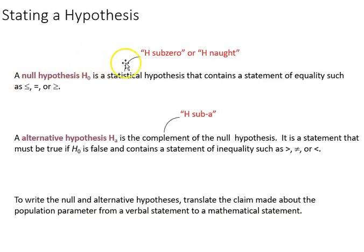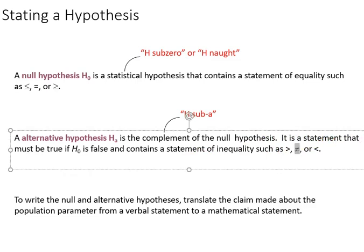The null hypothesis is the statistical hypothesis that contains a statement of equality, and we denote that with the letter H sub zero, the null hypothesis. The alternative is the complement, and that is denoted with H sub a for alternative. It is the opposite of equal. It could be more than, it could be not equal, and it could be less than.